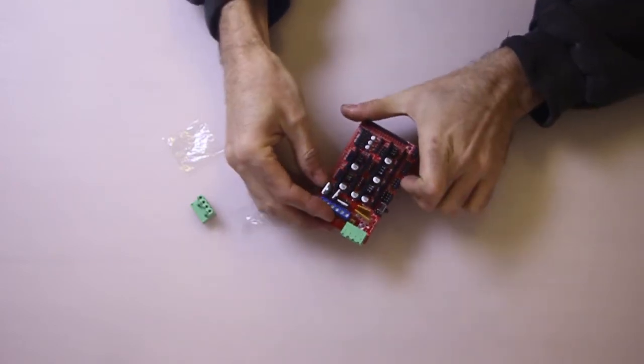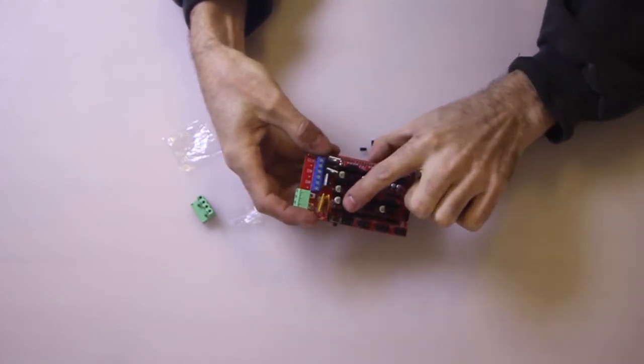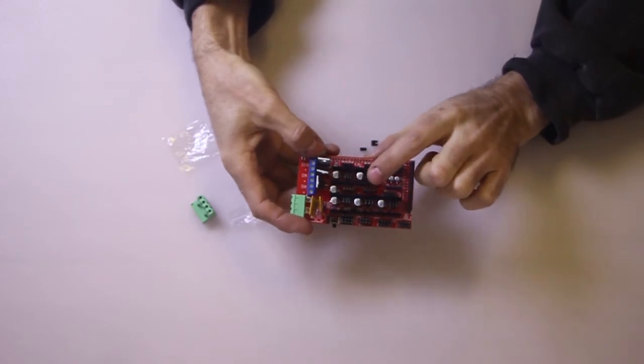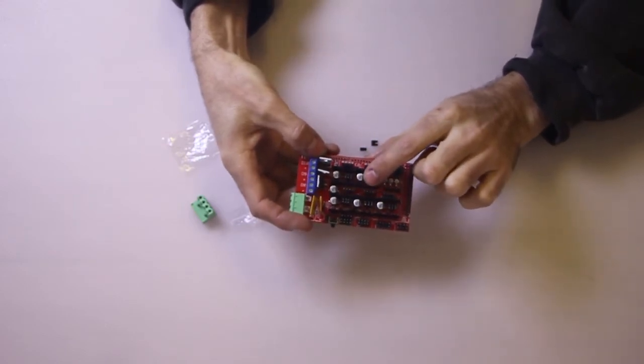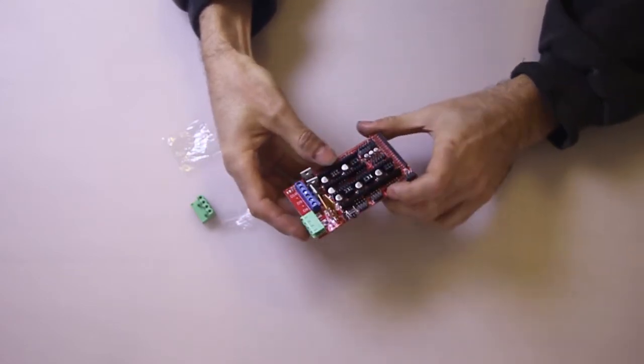And another thing I want to mention too is we've populated all of these, but we didn't really need to. So we've got X, Y, Z, extruder one and extruder two. We don't really use extruder two. We could have left those out, but keep them on there just to complete it.